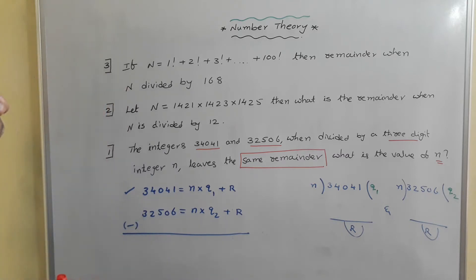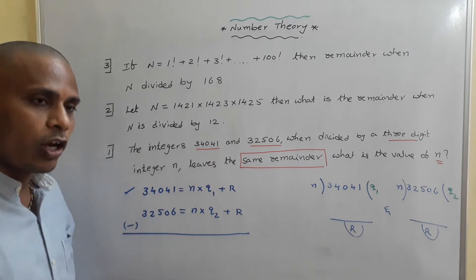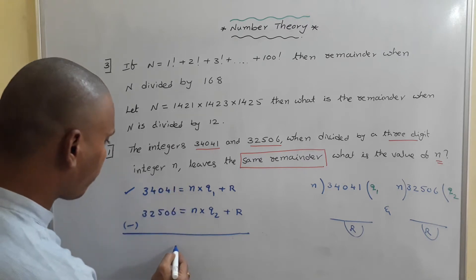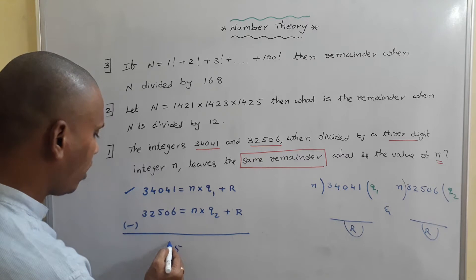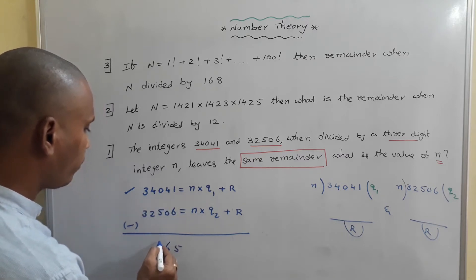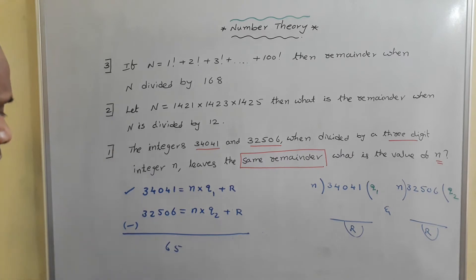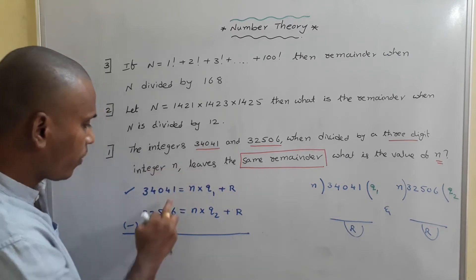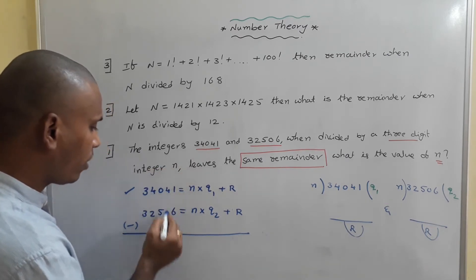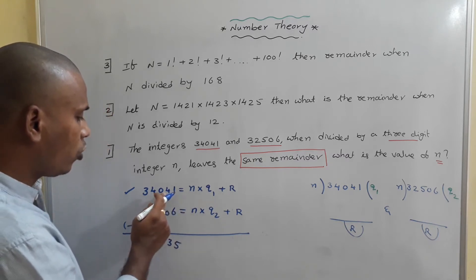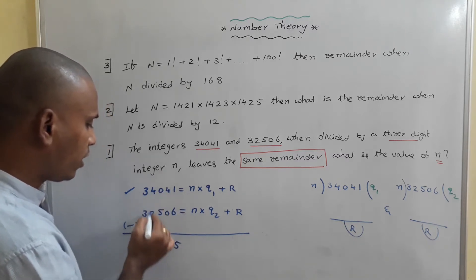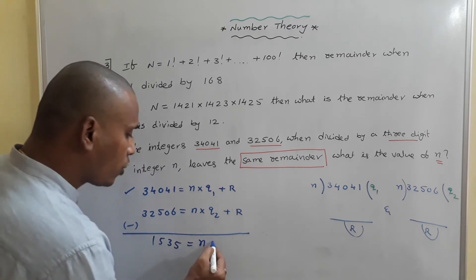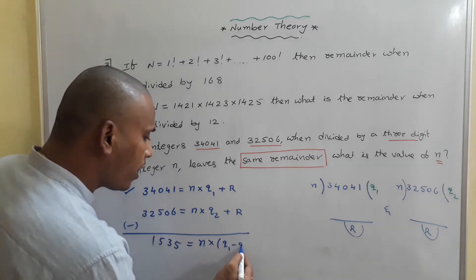You just go with subtraction. If you subtract, subtracting 34,041 minus 32,506: we get 1,535. So 1,535 equals n·q₁ minus n·q₂, which equals n times (q₁ - q₂).